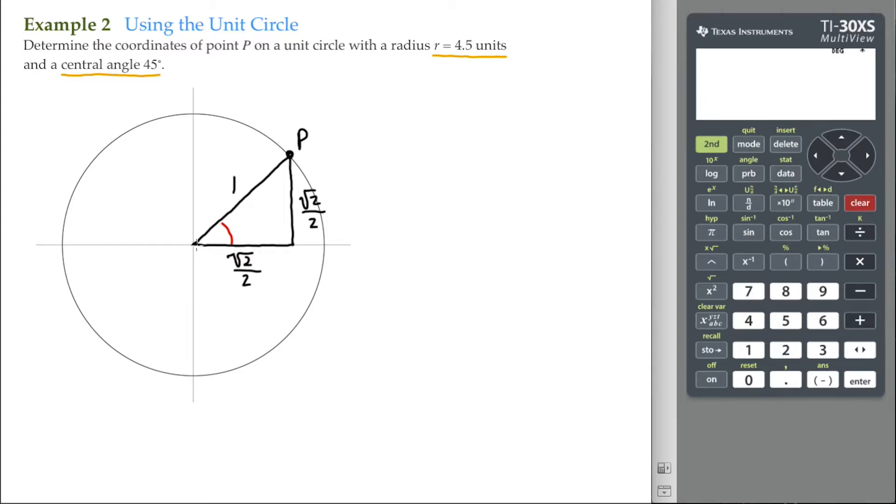So if we have a radius of 1 unit, then the coordinates right here for P are going to be root 2 over 2 for our x coordinate and root 2 over 2 for our y coordinate. However, it's not 1 unit. It's 4 and a half.